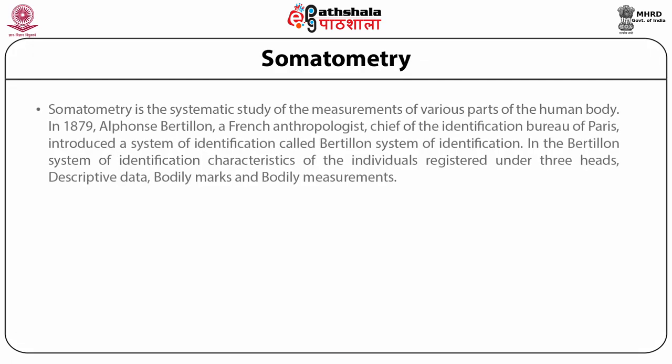Somatometry is the systematic study of the measurements of various parts of the human body. Identification through somatometry is accomplished by a series of required bodily measurements. In 1879, Alfonso Bertillon, a French police promoter and chief of the Identification Bureau of Paris, introduced a system of identification called the Bertillon System of Identification, a system of identifying people by their physical appearance.